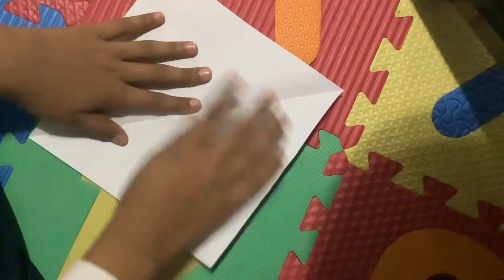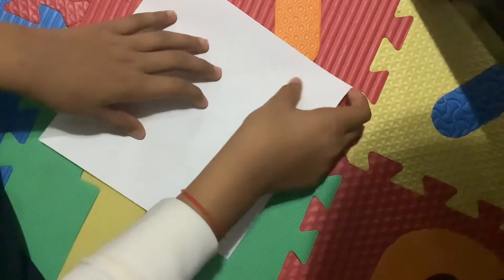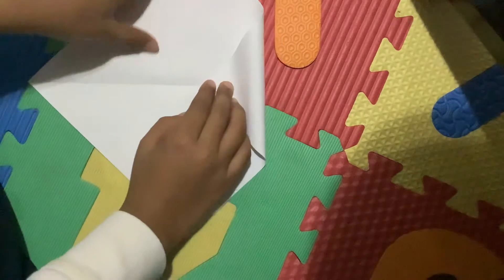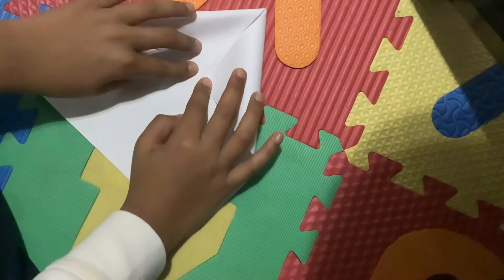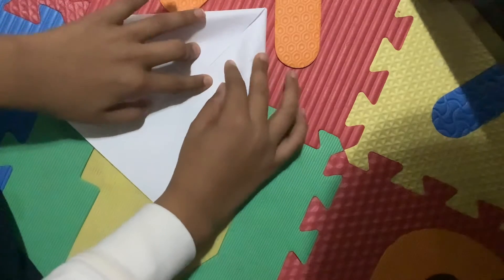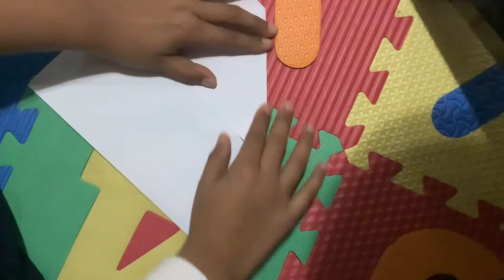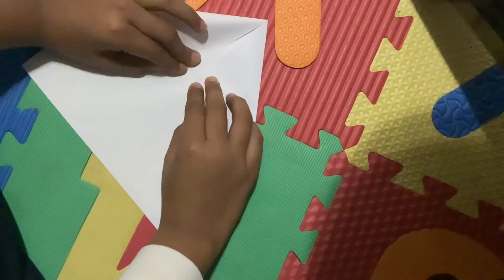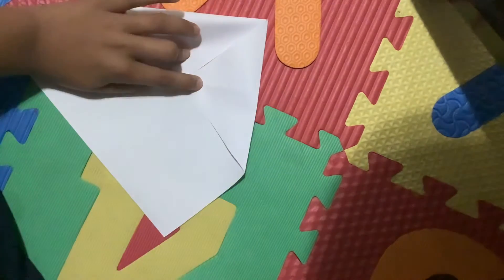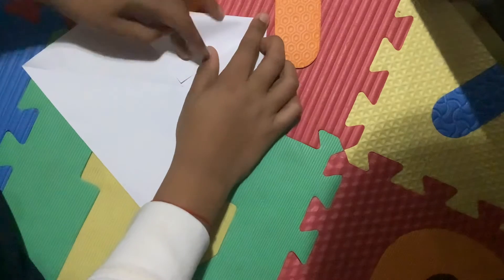And now we're going to move this paper off to the side and then open this up and it should be a square. And then we're going to fold this triangle in. We're going to fold in two triangles on this side and then fold and do the same on the other side like this.